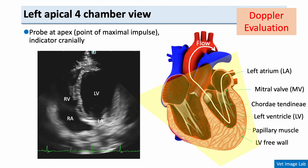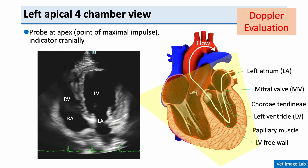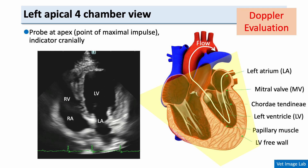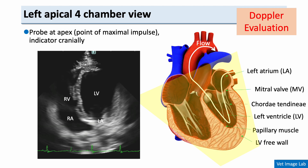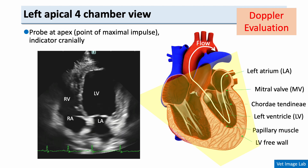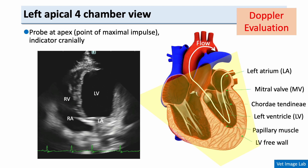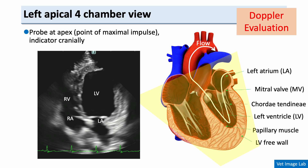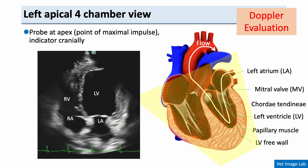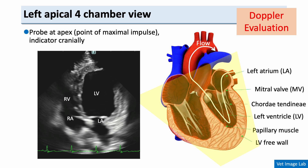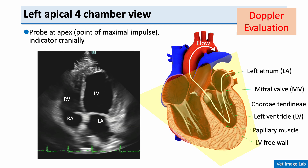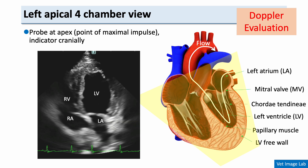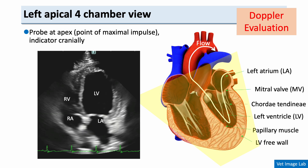In the left apical view, you can clearly see all four chambers — the right atrium and ventricle, and the left atrium and ventricle. Unlike the right parasternal long axis view, the atria and ventricles are aligned vertically in this view. Because of this orientation, the direction of blood flow is nearly parallel to the ultrasound beam, so you can achieve excellent alignment for Doppler interrogation.